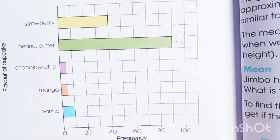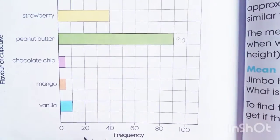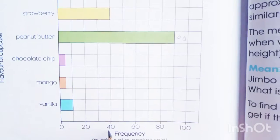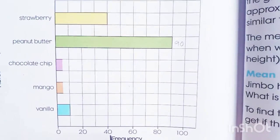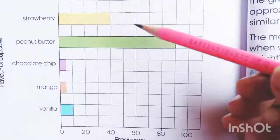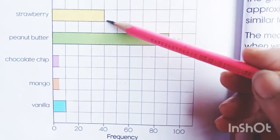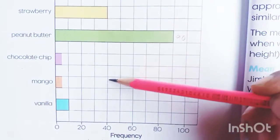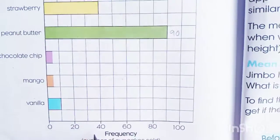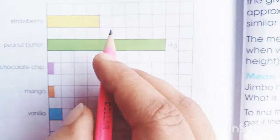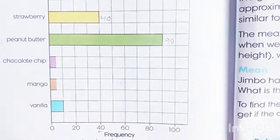For the strawberry flavor cupcake, the bar is coming to 40. Let's check — this is our line and this is our line. Yes, 40. We will write the number 40.